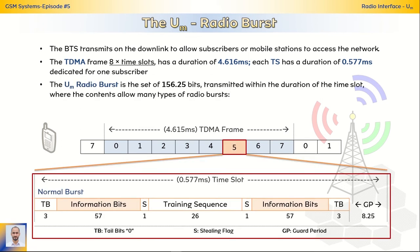The burst is the set of bits — 156.25 bits — where the different contents of these bits allow defining multiple types of bursts, like normal, frequency correction, synchronization, access, and dummy.